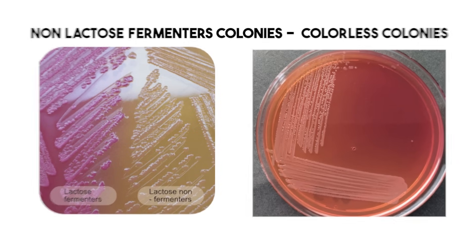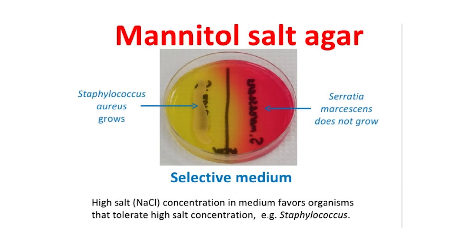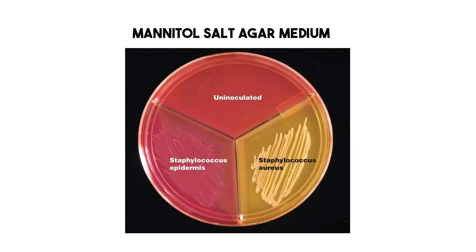Mannitol salt agar, or MSA, is selective because it has a really high salt concentration — most bacteria can't handle that, but Staphylococcus species usually can. It's also differential because it contains mannitol and a pH indicator. Staphylococcus aureus ferments mannitol, produces acid, and turns the indicator yellow around its colonies. Most other Staph species that might grow don't ferment mannitol, so the agar stays pink. Growth plus yellow color change is a strong suggestion it's S. aureus.